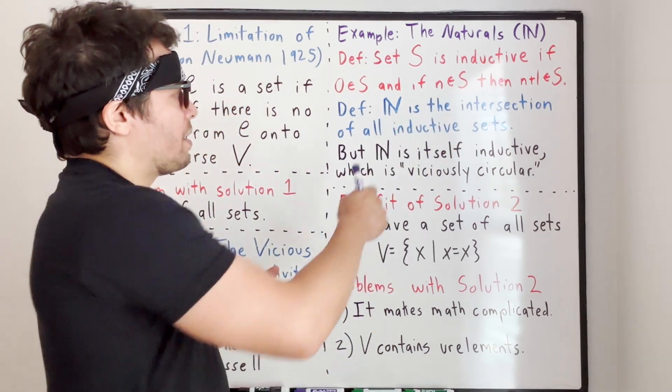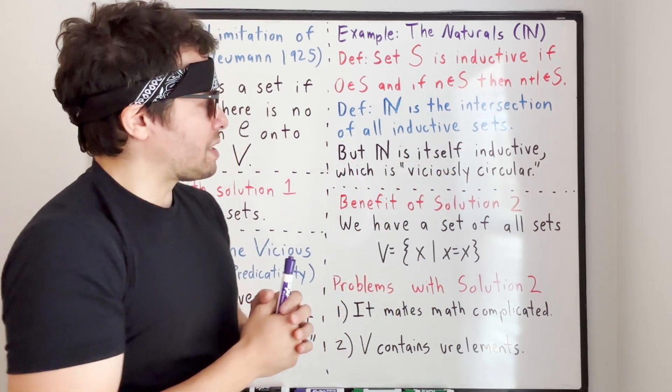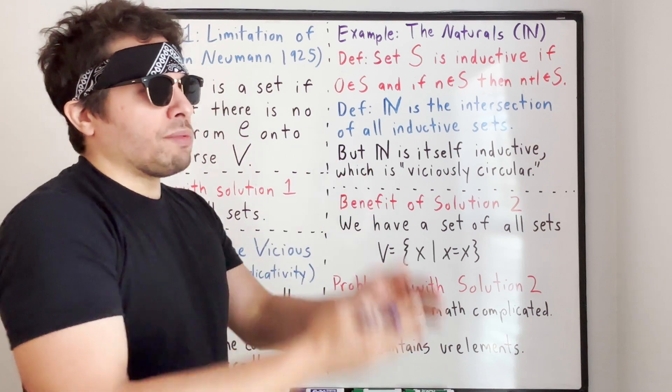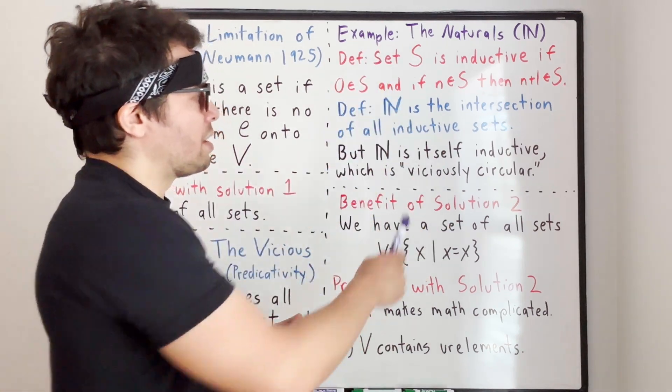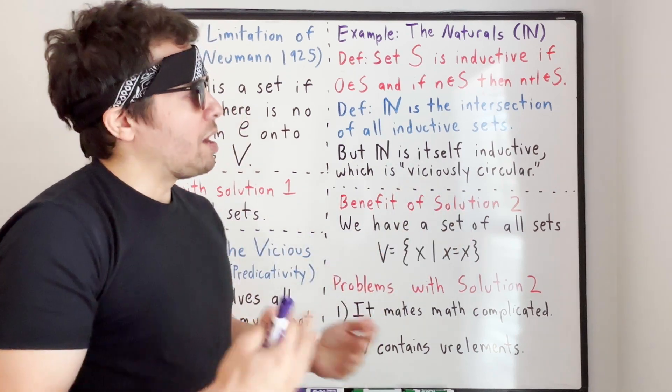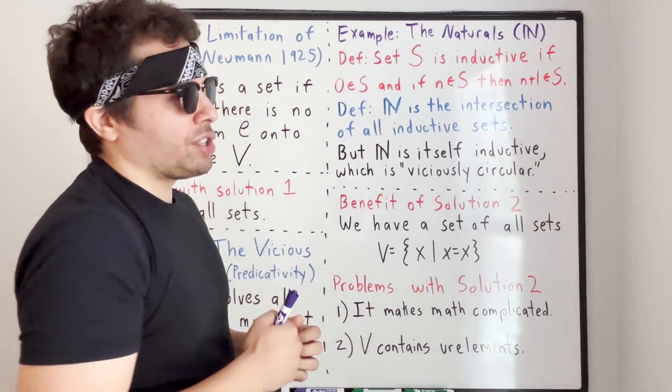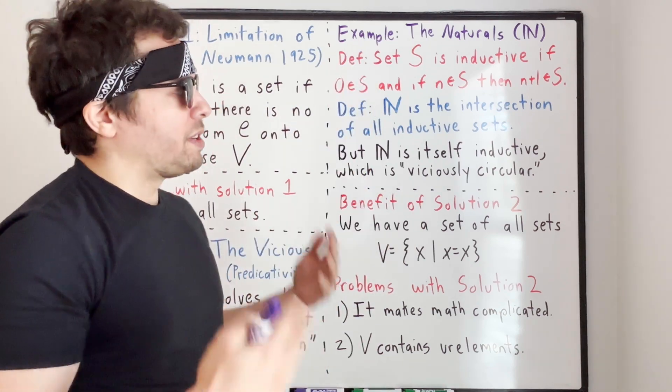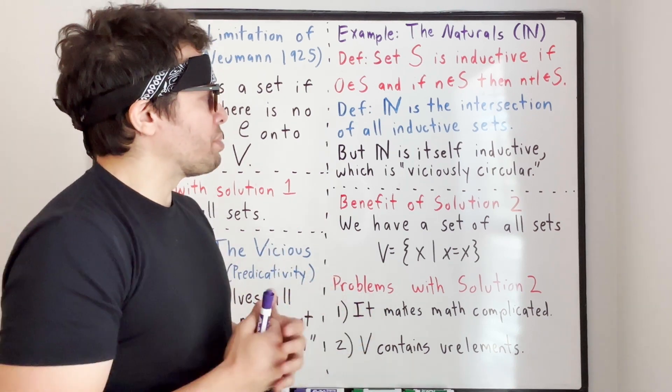Well, the problem here is that the natural numbers ℕ are themselves an inductive set. So they're one of the objects that we're taking the intersection over when we're defining the natural numbers. So the definition is viciously circular. I hope that clears some things up. The idea is that this definition of the natural numbers is impredicative. It is circular.